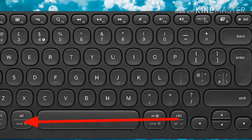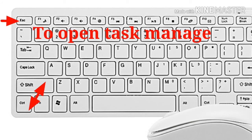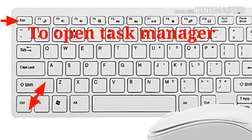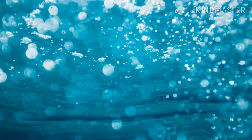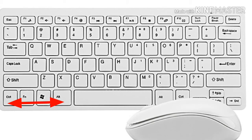Number 43: Control plus Shift plus Escape — open the Task Manager. Number 44: Control plus Alt plus Delete — which, as everyone knows, lets you reboot, power off, open the Task Manager, or access session options.